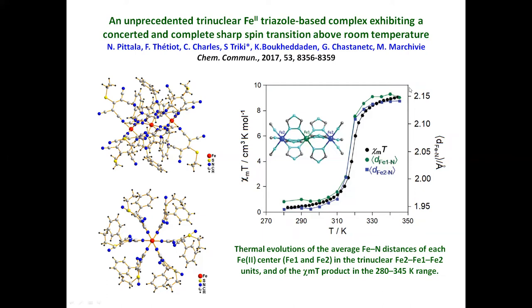To describe this spin transition, the authors also measured precisely the structure of the complex at different temperatures. They investigated the average bond length for the central metal ion and for the terminal metal ions, and showed that the change in bond length corresponds very well to the change in magnetic properties.